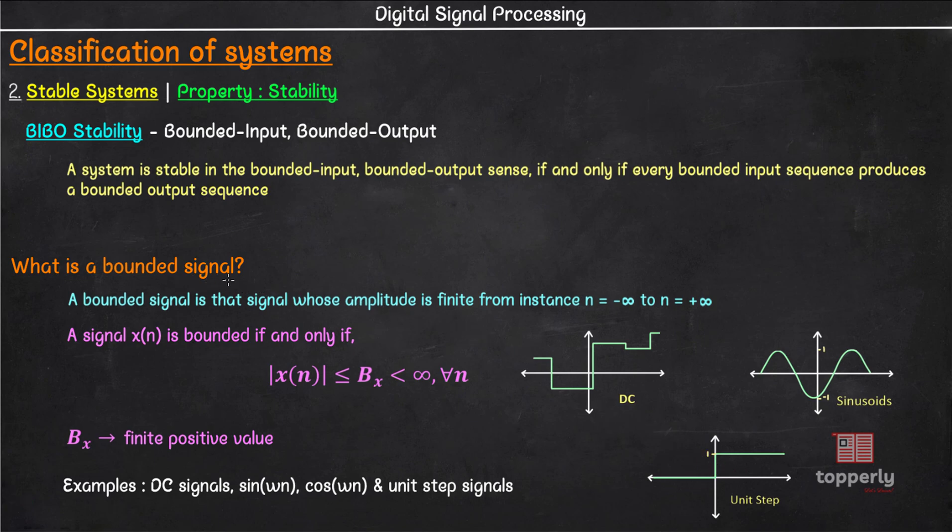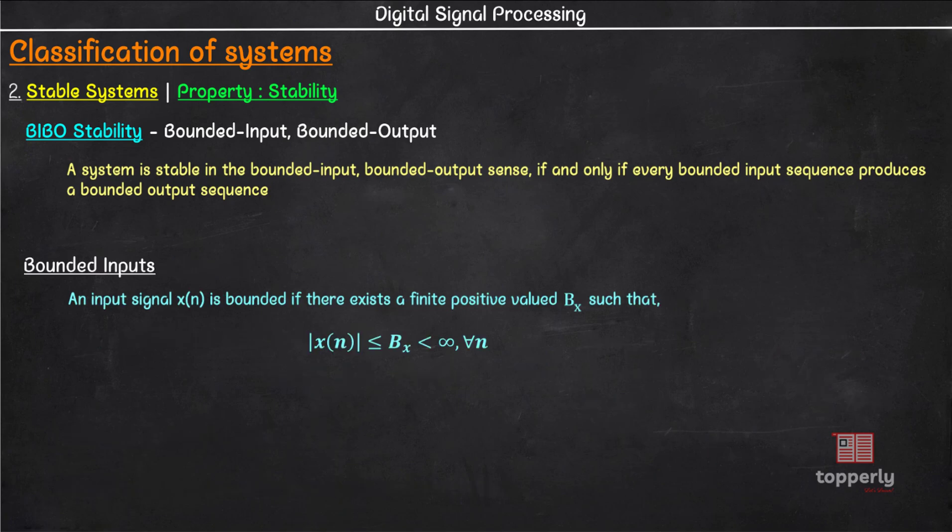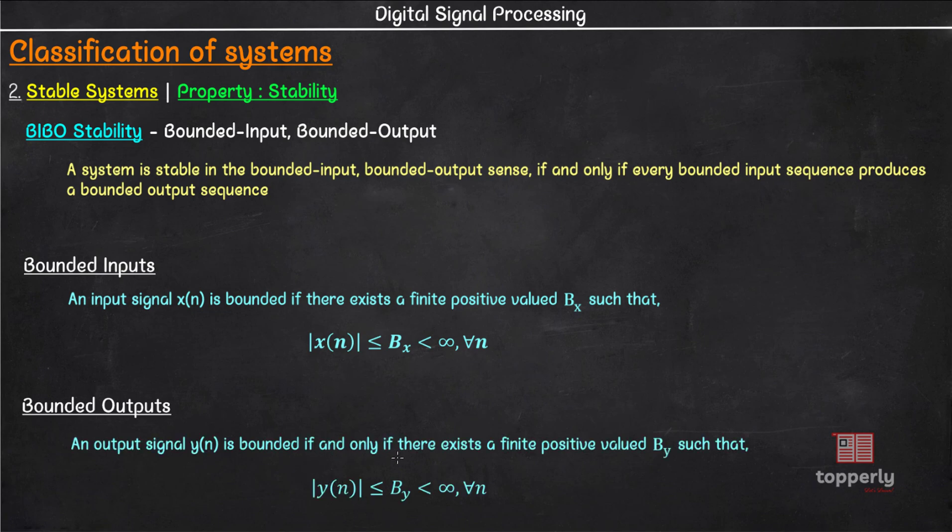Now that you know what is a bounded signal, you also know what are bounded inputs and bounded outputs. An input signal x(n) is bounded if there exists a finite positive valued Bx such that |x(n)| ≤ Bx < ∞ for all values of n. In similar fashion, an output signal is bounded if and only if there exists a finite positive valued By such that |y(n)| ≤ By < ∞ for all values of n.